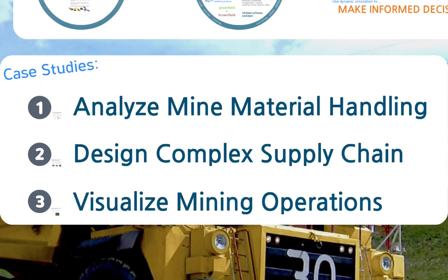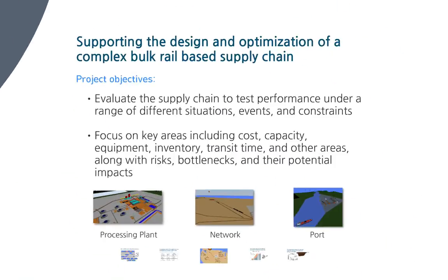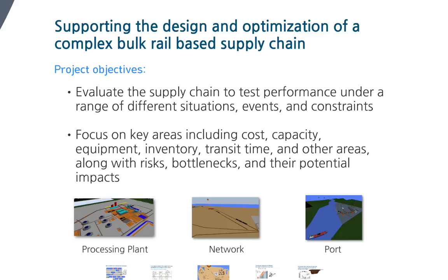The second case study involves the design of a complex supply chain. Essentially, we are looking at a system that takes the final product from processing plant storage at the mine to the end customer across a complex supply chain involving conveyor, rail, and port infrastructure. The requirement is to evaluate the supply chain to test performance under a range of different situations, events, and constraints. The risks, bottlenecks, and their potential impacts on the system are furthermore important.